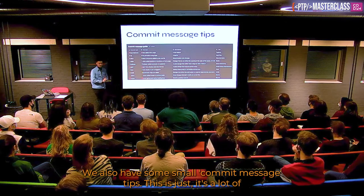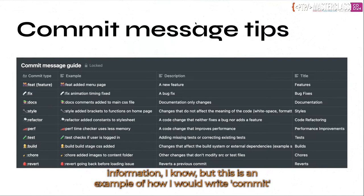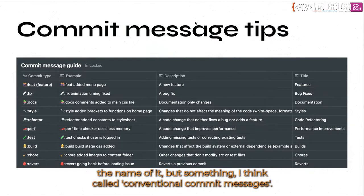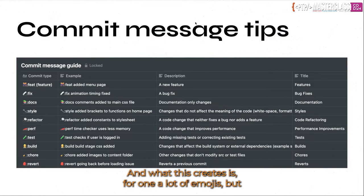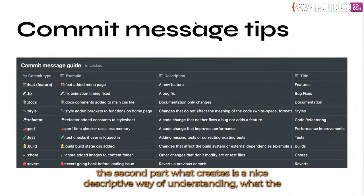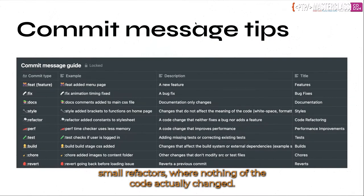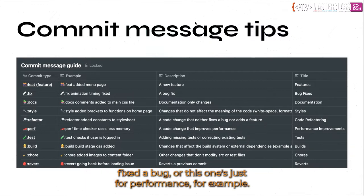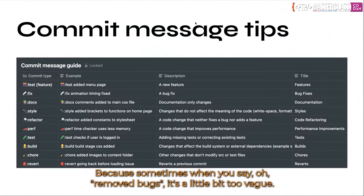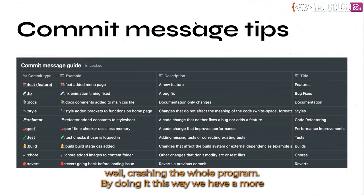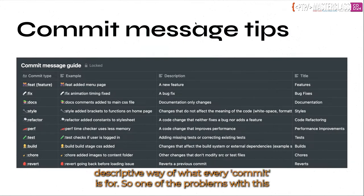We also have some commit message tips. This is an example of how I write commit messages — I've been using this for the last three years. It's based on something called conventional commit messages, and what it creates is a nice descriptive way of understanding the goal of every commit, because not every commit is the same. Some are just small refactors where nothing actually changed; some add a feature, fix a bug, or improve performance. By doing it in this structured way, everyone on the team knows what each commit is for — 'removed bugs' is a little too vague. This way we have a more descriptive understanding.